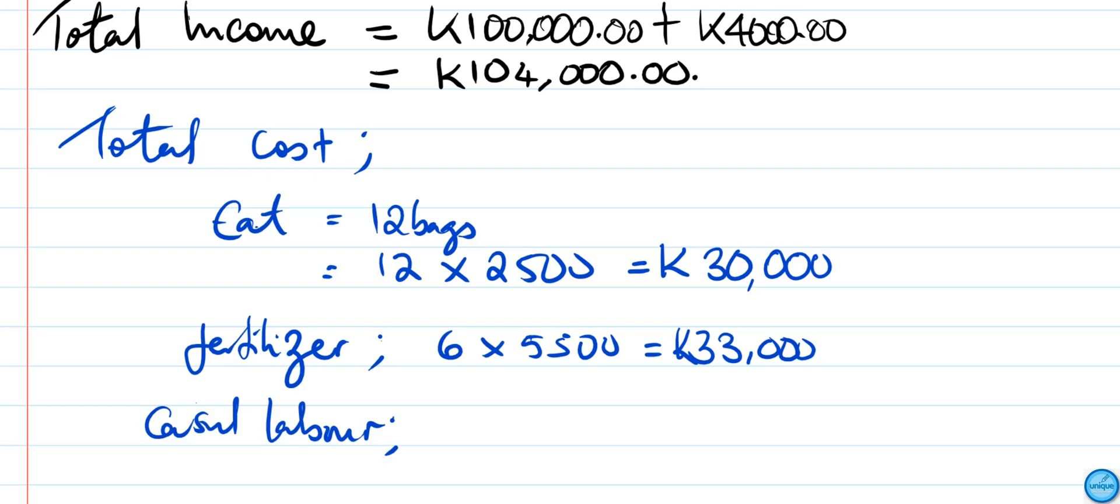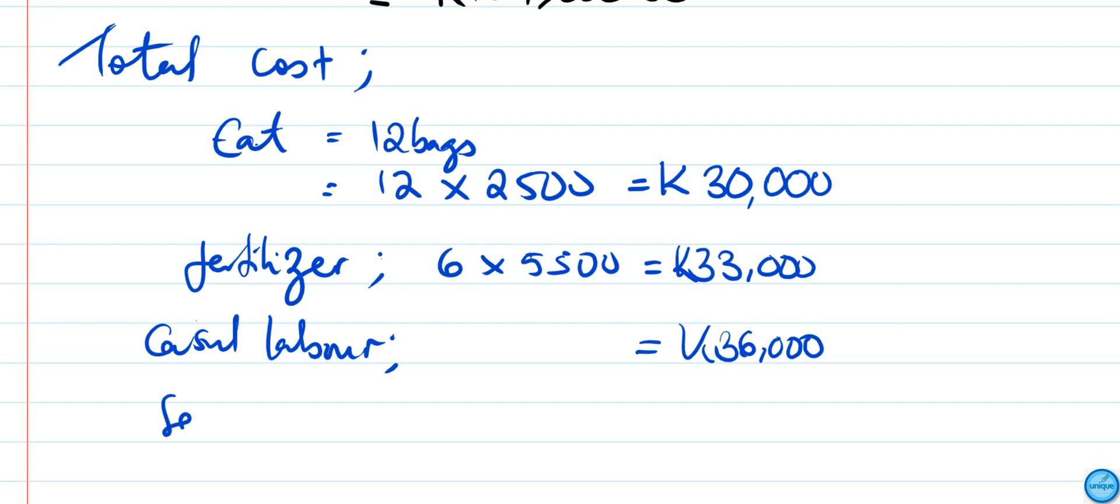For seeds, he bought 20 kg which was bought at K150. So we're going to do 20 kg multiplied by K150. If you multiply 150 by 20, the answer is K3,000.